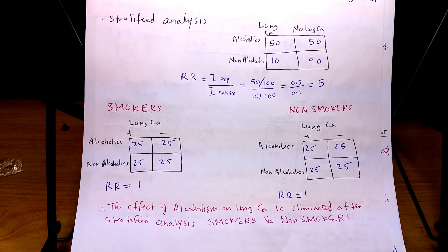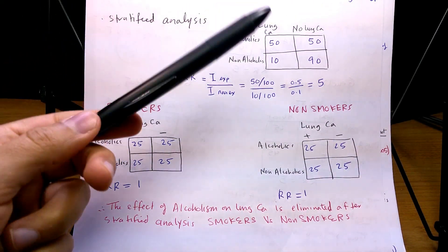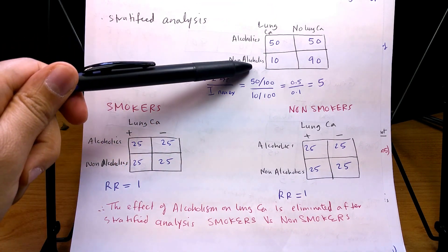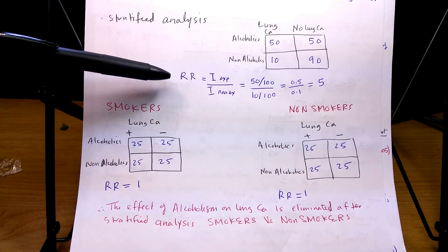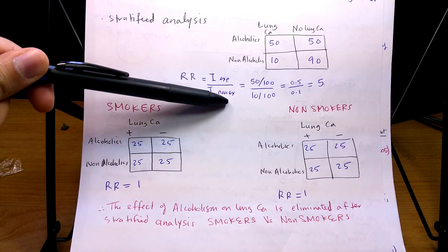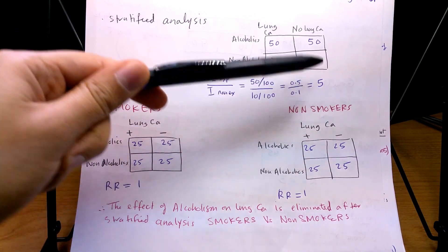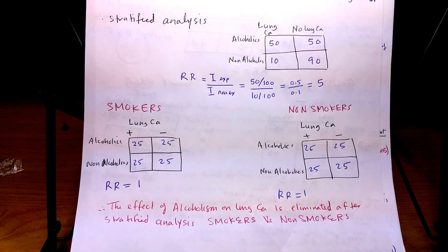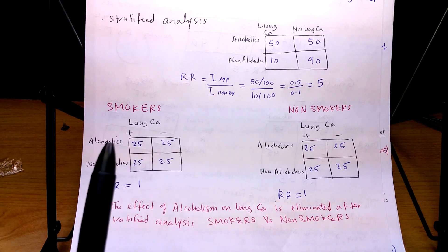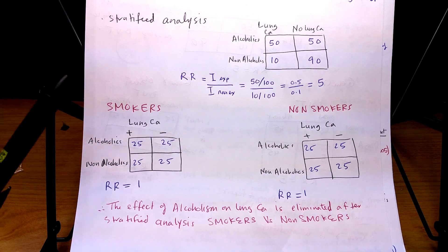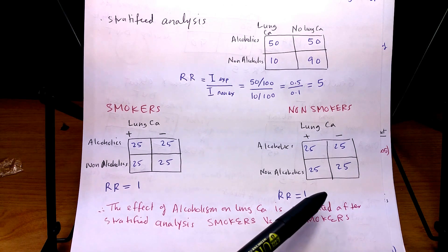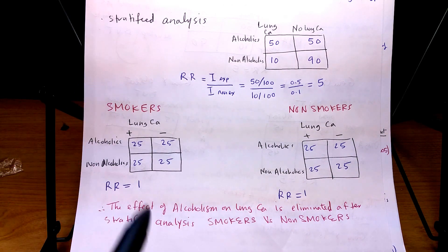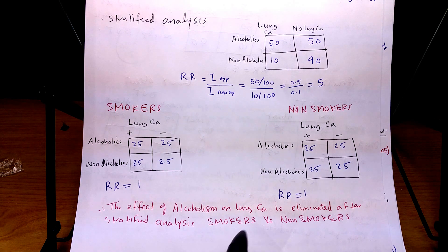Is the relative risk the same or has it changed? Initially, looking at alcoholics versus non-alcoholics and lung cancer versus no lung cancer, the relative risk is 5 — meaning alcoholics appear 5 times more likely to get lung cancer. But when the group was divided into smokers and non-smokers and the same analysis was repeated, the relative risk was the same in both subgroups. They concluded that the effect was eliminated after stratified analysis by smoking status.